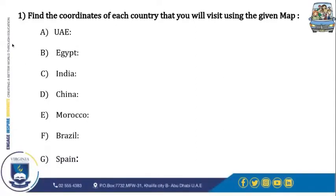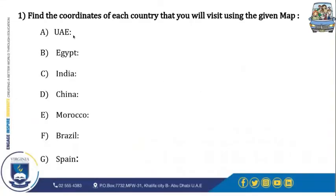The first task is to find the coordinates of each country that you will visit using the given map. For example, for the UAE, go back to the slide — here is the UAE. Starting from zero, count one, two, three, four, five — the UAE is between five and six, so five point five. Then going up, one, two — it's between two and three, so two point five. You write it in brackets as (5.5, 2.5), and do the same for the rest of the countries.